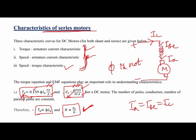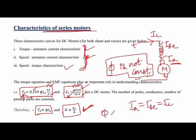Since the line current flows through the series field winding, the flux is not constant — unlike the shunt motor where the field winding is in parallel and flux remains constant. In the series motor, as load increases, IA increases, and so does the current through the field winding. Therefore, flux is directly proportional to IA in the DC series motor.